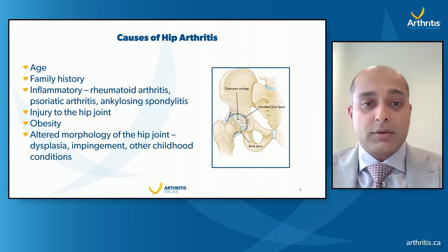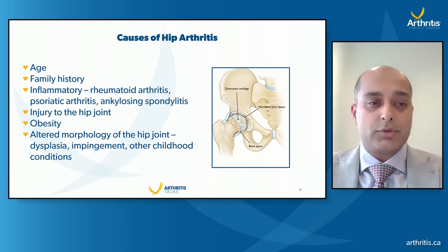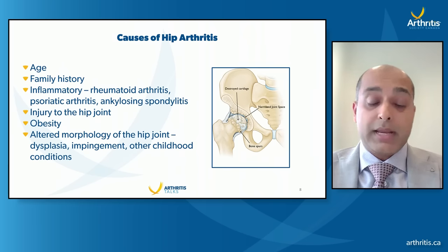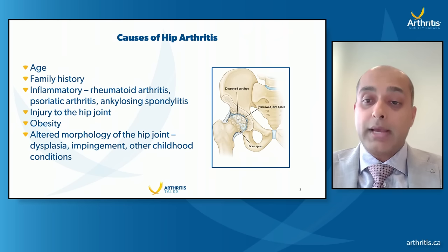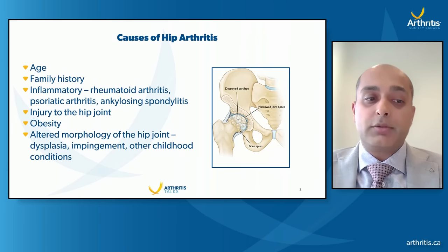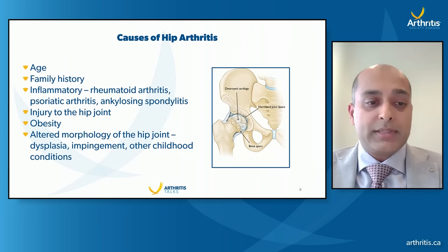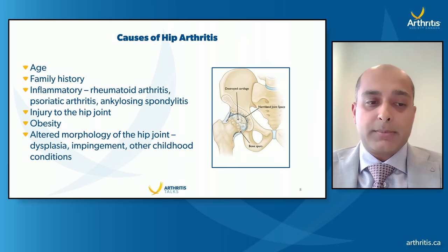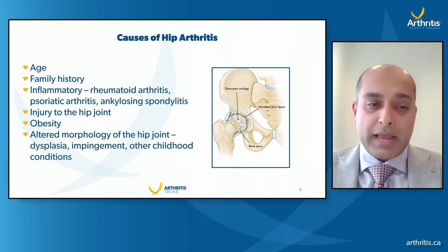The causes of hip arthritis are multifactorial — both manageable and non-changeable. Age and family history play a significant role. Inflammatory conditions like rheumatoid arthritis, psoriatic arthritis, and ankylosing spondylitis contribute as well. Hip injury can damage cartilage, increased BMI adds load-related trauma, and altered morphology of the hip such as dysplasia or impingement can also lead to arthritis.